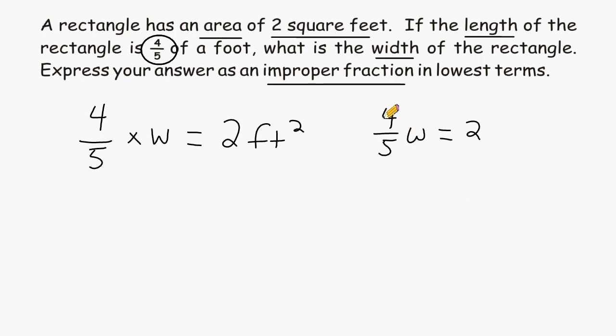And to get rid of a coefficient, all you have to do is multiply the coefficient by its own reciprocal. So we're going to take 4 fifths and multiply it by 5 quarters.